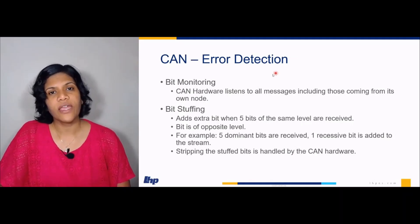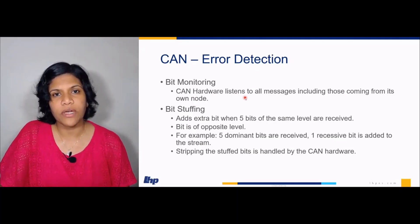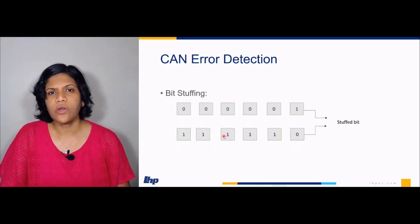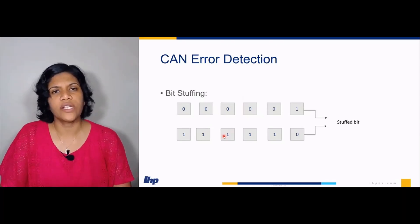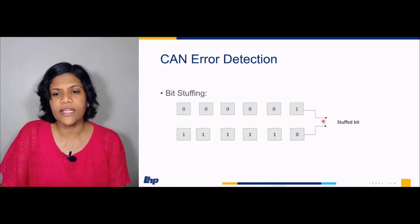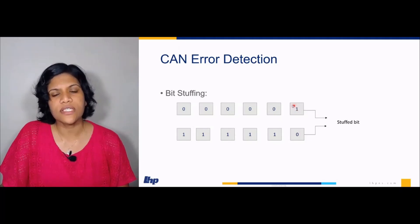Next is error detection. There are five mechanisms for error detection. First is bit monitoring — the CAN hardware listens to messages on the CAN bus at all times. Next is bit stuffing. For example, if some ECU has failed and keeps sending the same bit, we don't know whether it is a stuck ECU or actual data. So, if the same bit is transmitted five times in a row, an opposite bit will be added as a stuffed bit. When ECUs receive the same bit five times in a row, they expect to receive an opposite bit. If that opposite bit is not received, it is confirmed that the transmitting ECU has failed.